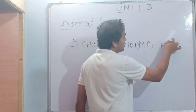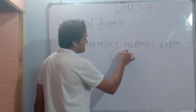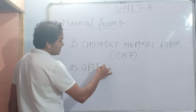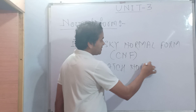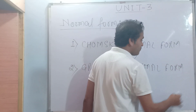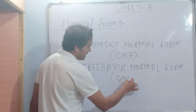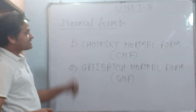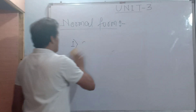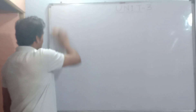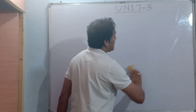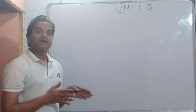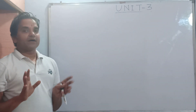Chomsky Normal Form is abbreviated as CNF. The second one is Greibach Normal Form, also abbreviated as GNF. I will also ask you to convert a given grammar into CNF — that is, convert the given context-free grammar into CNF.